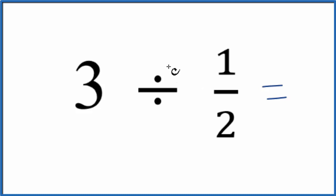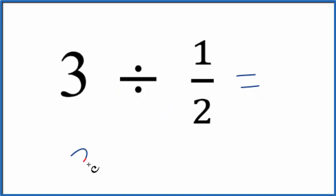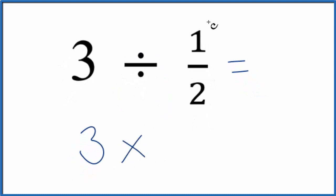What we can do is do the opposite of division. The opposite of division is multiplication. So three times, but then we need to take the reciprocal of one half. So we'll take two up here and one down here. So we're going to end up with two over one.